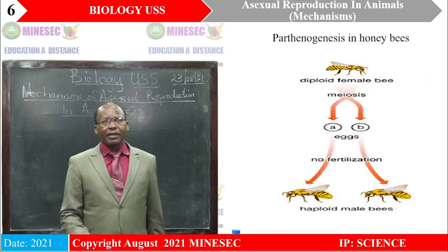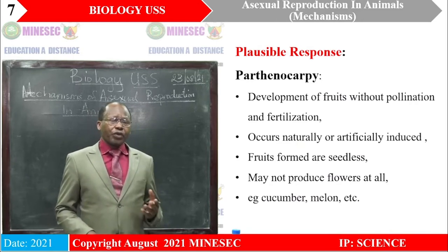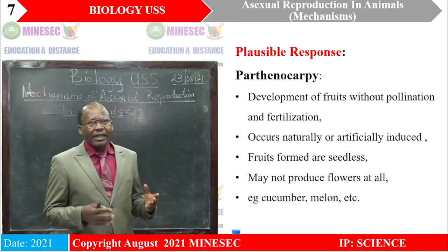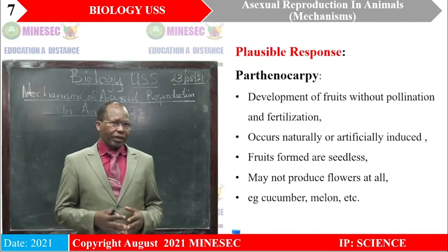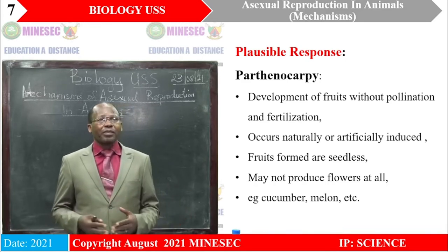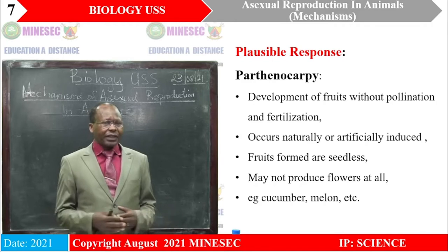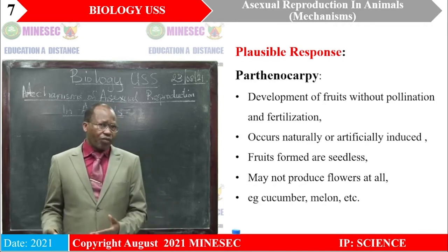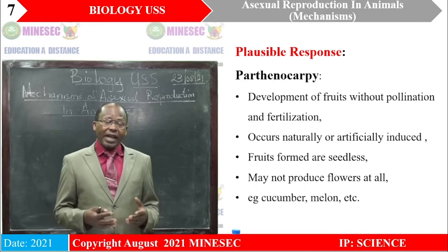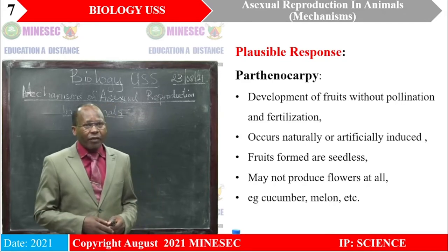The other term was Parthenocarpy, which is similar in name to Parthenogenesis. For Parthenocarpy, this is the development of fruits without pollination and fertilization. Parthenogenesis takes place in animals, while Parthenocarpy takes place in plants. This occurs naturally or can be artificially induced by man. The fruits formed from this process do not produce seeds and may equally not produce flowers at all. An example in our environment is the cucumber; you also have watermelon.